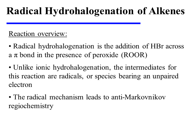Radical hydrohalogenation is the addition of HBr across a pi bond in the presence of peroxide. Unlike ionic hydrohalogenation, the intermediates for this reaction are radicals, or species bearing an unpaired electron. The radical mechanism leads to anti-Markovnikov regiochemistry.